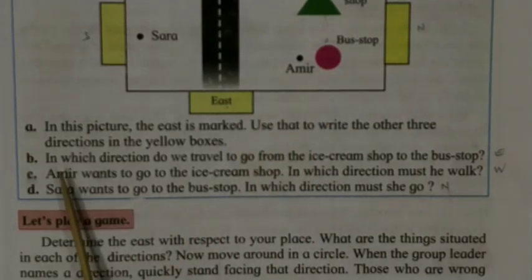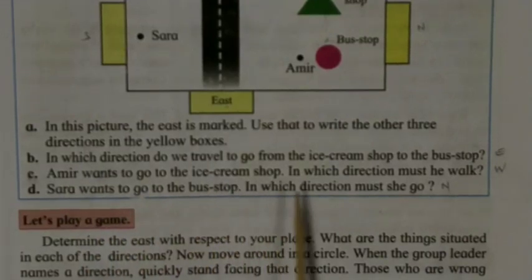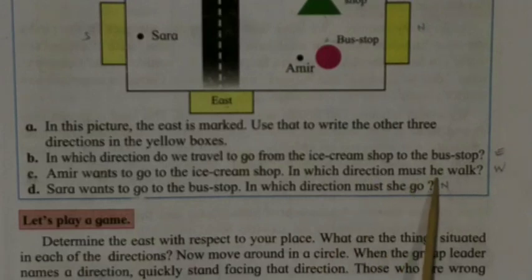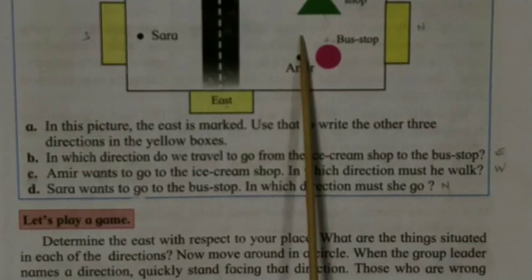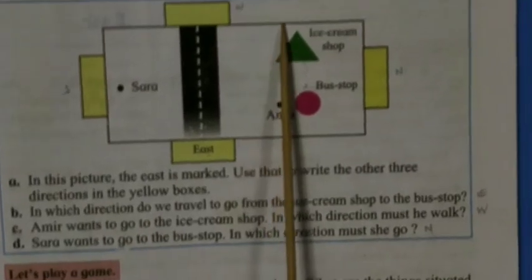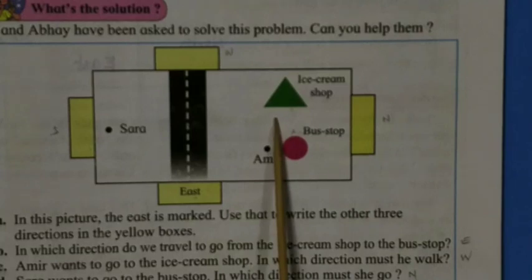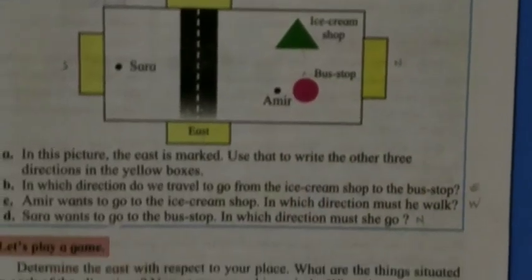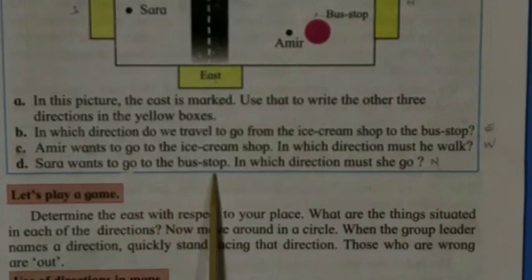Next: Amir wants to go to the ice cream shop — in which direction must he go? Amir is standing here and wants to go to the ice cream shop, moving forward in the west direction. So Amir must move towards the west.